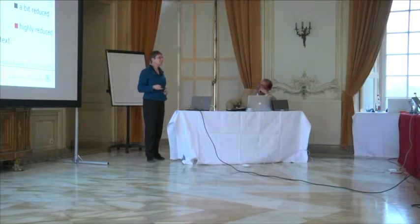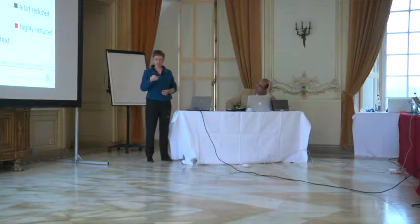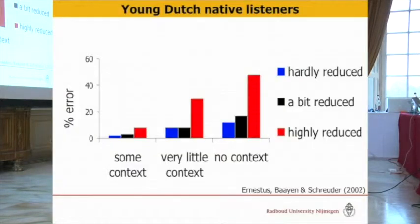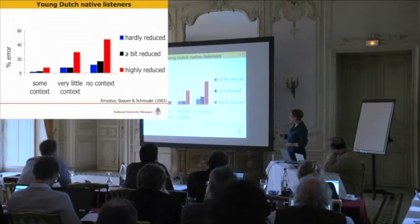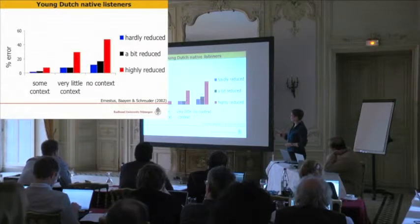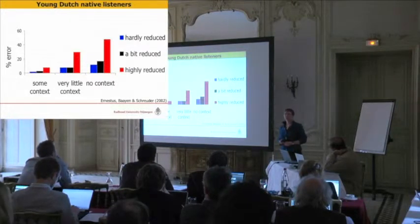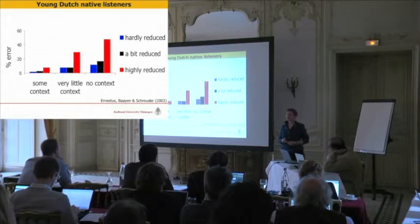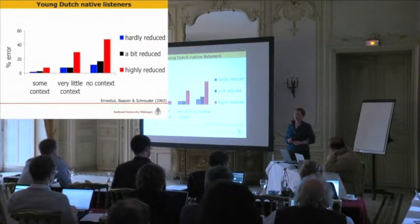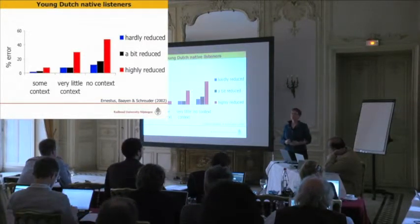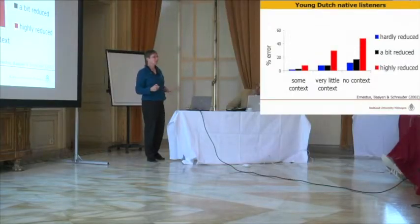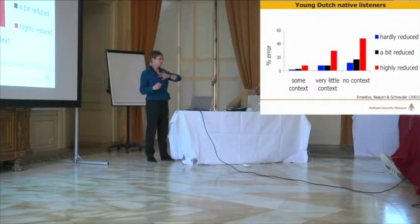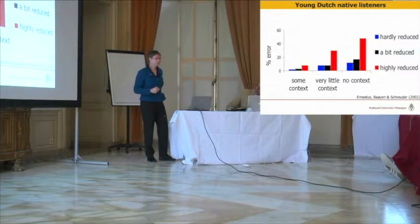But this was completely different for the highly reduced variants. In context it was still okay. When people got very little context, they already made errors in one out of three cases. But if the words were presented in isolation, then in one out of two cases they couldn't recognize the target words. So what you see here is that reduced pronunciation variants are fine for young, native, healthy listeners as long as they are presented in context — because if they are presented out of context, people can't do anything with them at all.